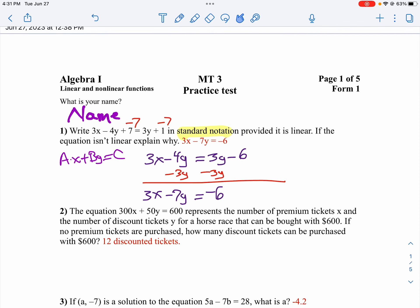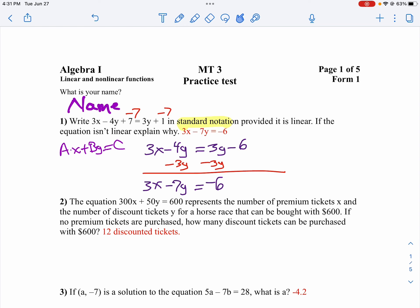On question number 2, we have this equation that represents the number of premium tickets X and the number of discount tickets Y that can be bought for $600. So if no premium tickets, that means X would be 0. So it would be 300 times 0 plus 50Y equals 600. Well, that's really 50Y equals 600, then.